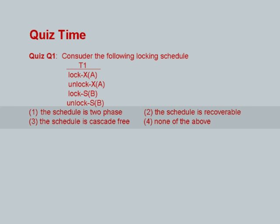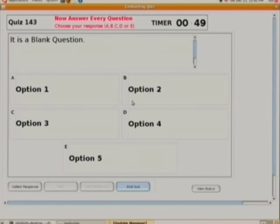The question: there is a transaction that does lock X on A, then unlock X on A, then lock S on B, then unlock S on B. The options are: the schedule is two-phase; the schedule is recoverable; the schedule is cascade-free; none of the above. Please select the option. You have 10 more seconds — time is up.